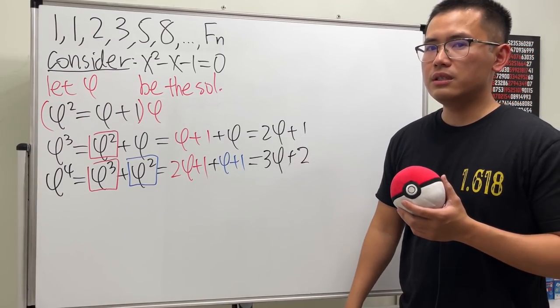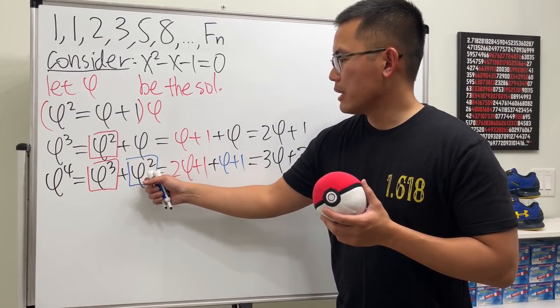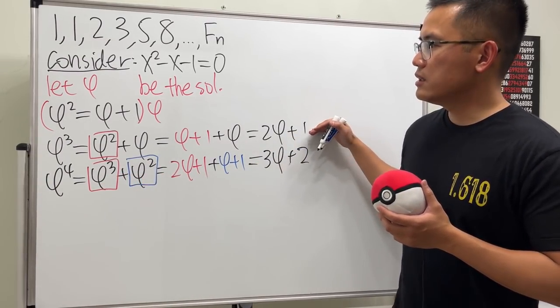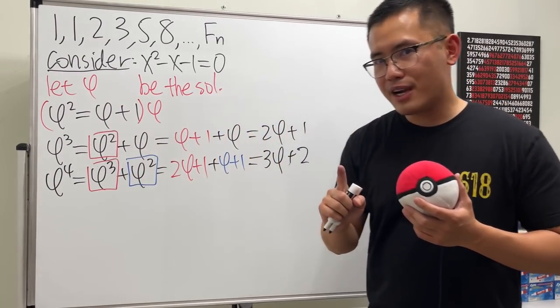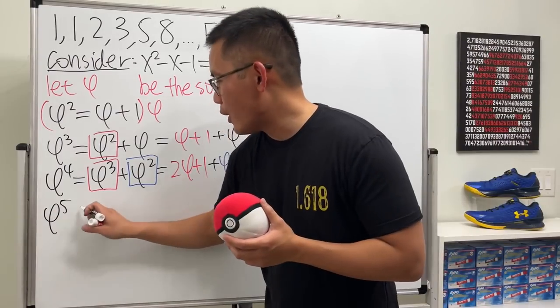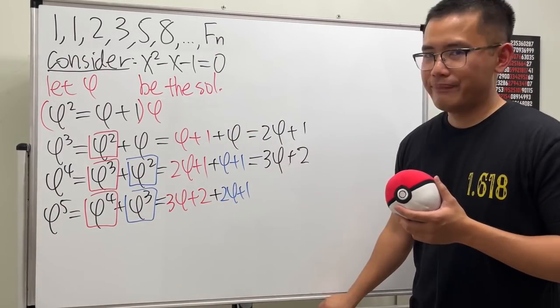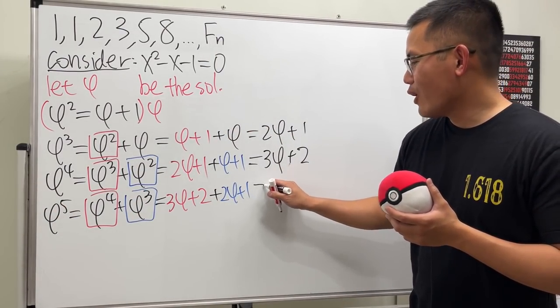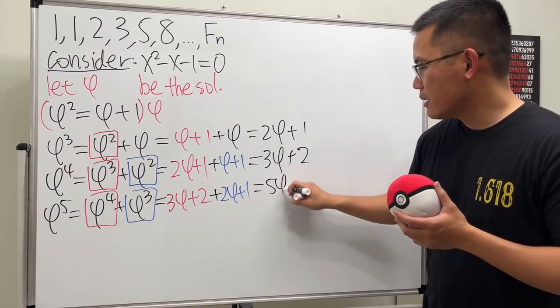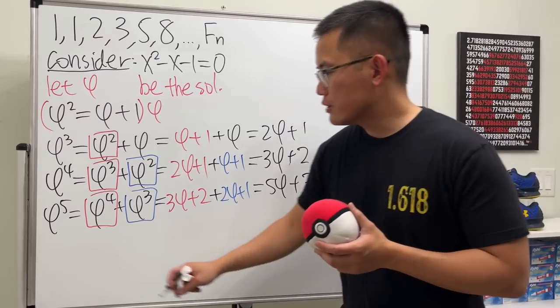But did you guys notice what we just did? φ to the third power plus φ squared, which is this plus that. Okay, keep that in mind. Let's do it again. Guess what? All in all, we get 5φ plus 3. Good.